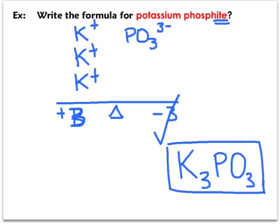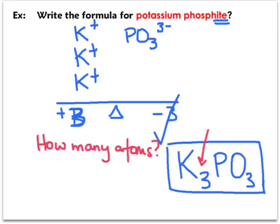How many atoms are within the formula for potassium phosphite K3PO3? You can see there are three potassiums, one phosphorus, and three oxygens — a total of seven atoms within this formula. Let's look at another example.